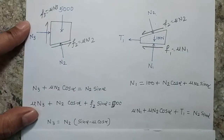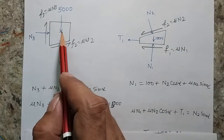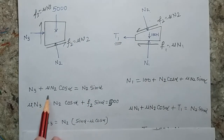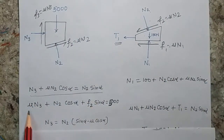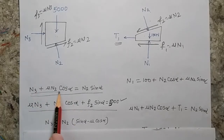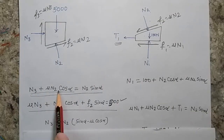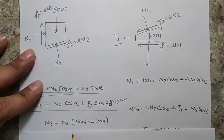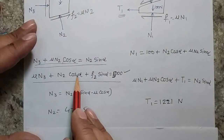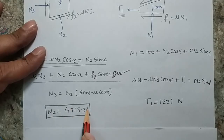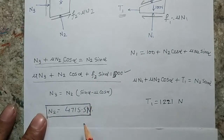Here are my equations. I solve the wedge first since T is unknown. Writing the horizontal and vertical force balance equations: the vertical force balance gives one equation and the horizontal force balance gives another. Solving the first equation gives a relation between N2 and N3. Substituting into the second equation gives the values of N2 and N3. I am getting a value of N2 coming out as 4715.5 Newton.